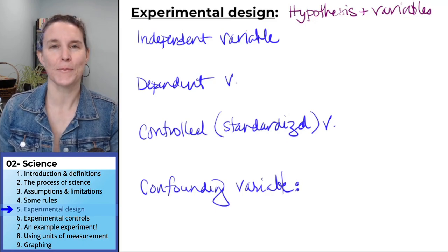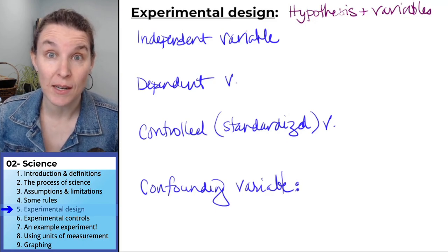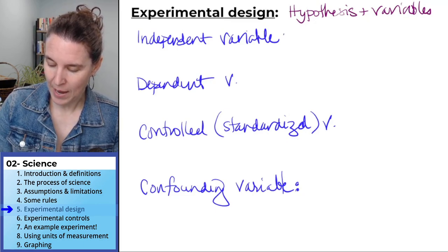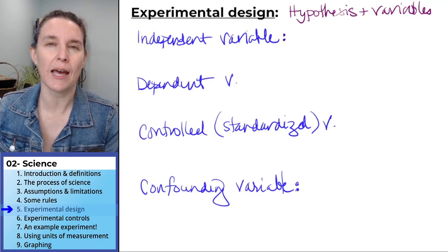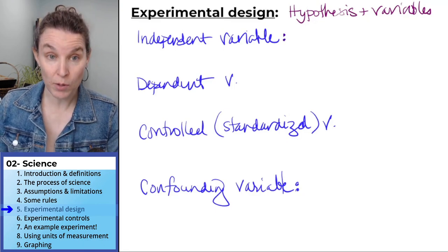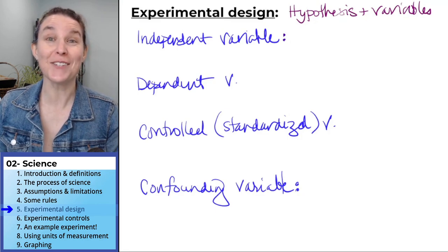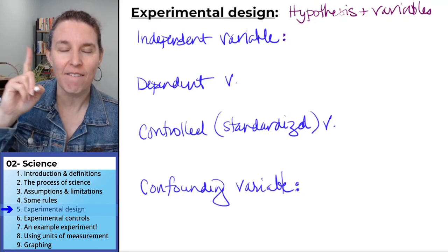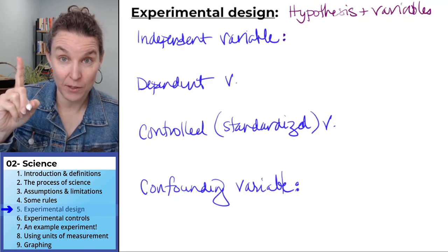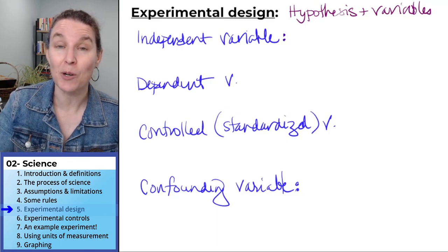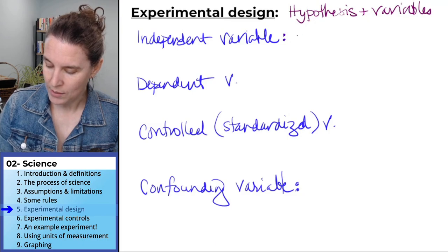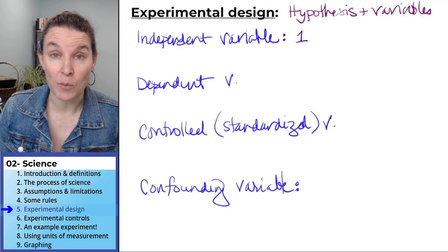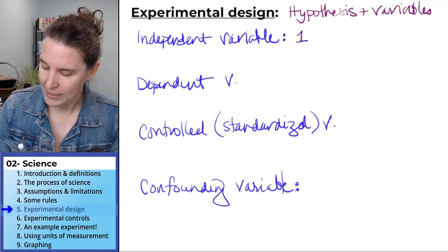Okay, so we have four types of variables, and I've listed them in an order that's going to help us remember what they are. At the top of the list is the independent variable, and I'm going to tell you right now, in any experiment, you want one, you want one independent variable, and I'm going to tell you what it is.